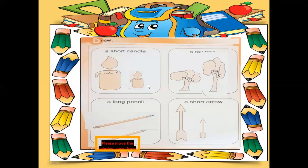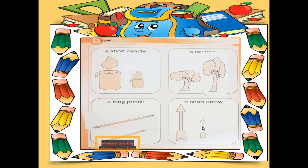To recap: in the first exercise they said to draw a short candle - you draw it like this. In the second, draw a tall tree - you draw the tall tree. In the third, draw a long pencil longer than the mentioned one. And in the last one, draw a short arrow shorter than the given one.